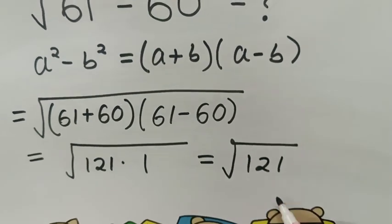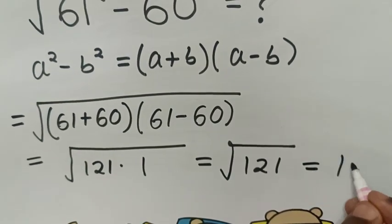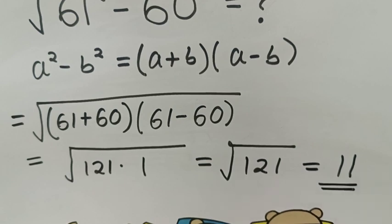So, square root of 121 is equal to 11. Therefore, this is our final answer.